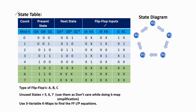In this state table we have different columns. The first one is count, the second is present state, then next state, and flip-flop inputs. Count provides the total number of states in the counter — here the mod value is 5, so 0 to 4. In present state, it requires three flip-flop outputs: QA, QB, QC. Next state means after applying the clock pulse we get QA*, QB*, and QC*. From present state and next state, we find the flip-flop input values using K-maps.